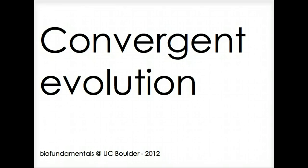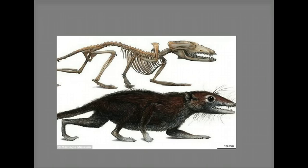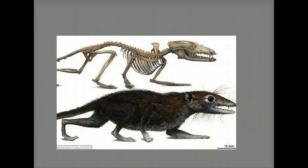The example that we will use is the evolution of canine teeth. The common ancestor of all mammals — that is the monotremes, the marsupials, and the placental mammals — lived about 180 million years ago, give or take, and may have looked something like this early placental mammal.